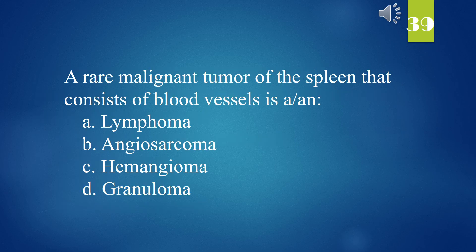A rare malignant tumor of the spleen that consists of blood vessels is: A. Lymphoma. B. Angiosarcoma. C. Hemangioma. D. Granuloma. The answer is B. Angiosarcoma.